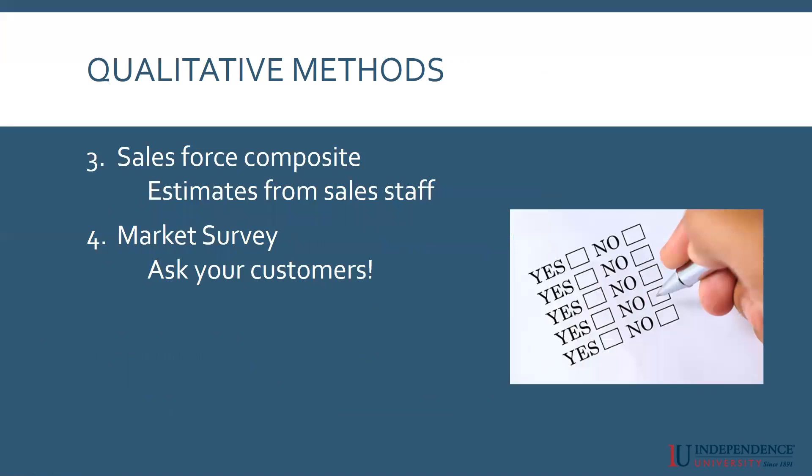A third way is simply to talk to your sales force. Sales forces have a tendency to overestimate how much they're going to sell, so be very careful and try to get as accurate numbers as possible. But the sales force is probably the closest one to the customer, and they probably understand whether customers are going to back off or be interested in buying more. So there's valuable information there.